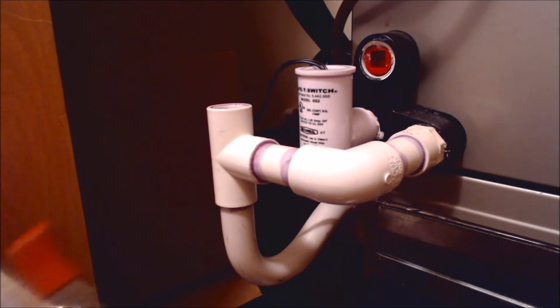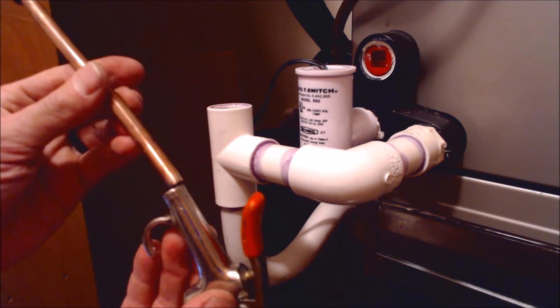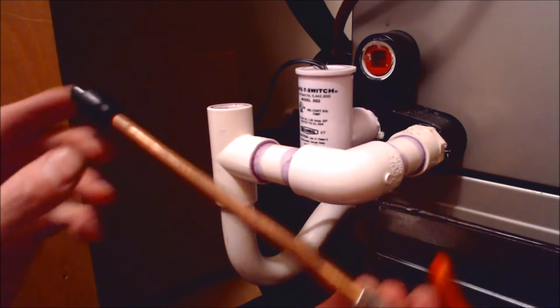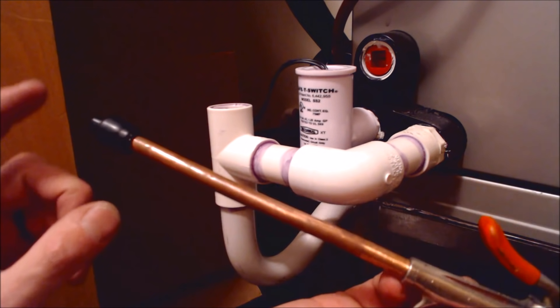Something else that you can use instead is compressed air and you can have an extension that threads in here, or you could use a piece of three-eighths OD copper and then you just wrap electrical tape on the end in order to increase the outside diameter.